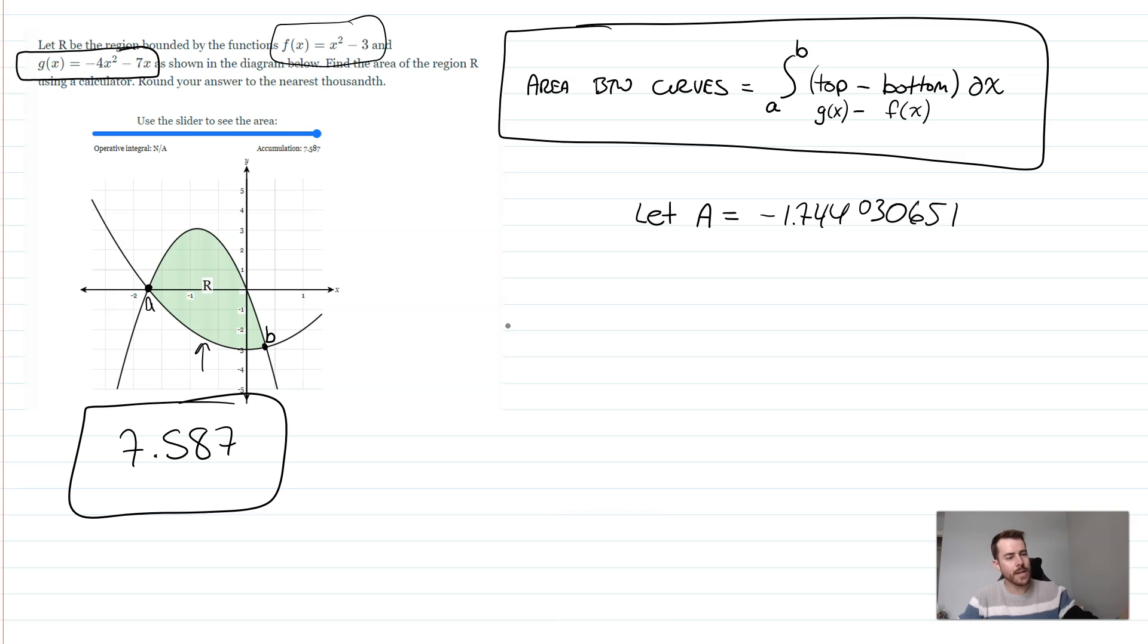As long as you write that down once, then any time you refer to this, you can just write an A in there, as long as this let statement is in here. So you have to write let A equal, let B equal, and then you can put A and B in there, as long as you have it written down once.